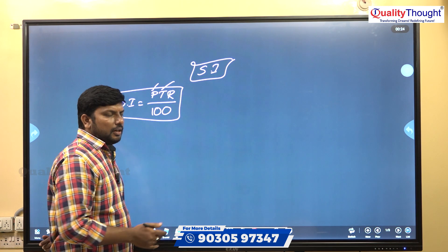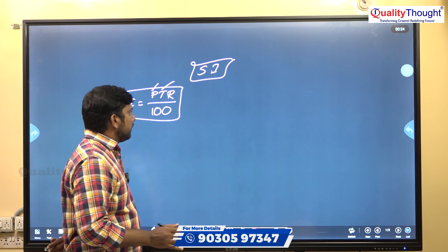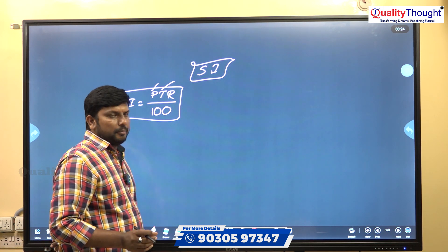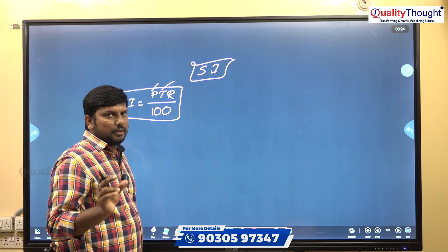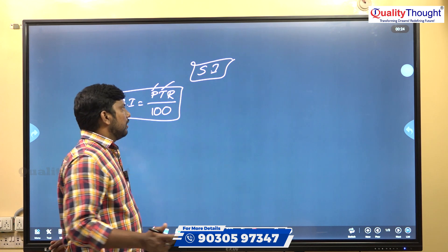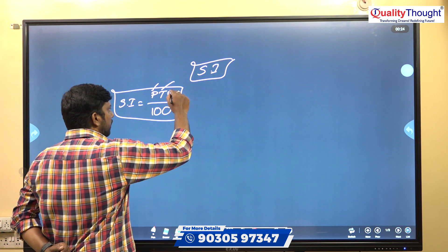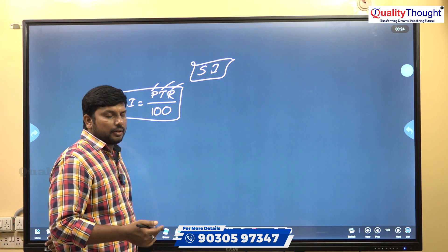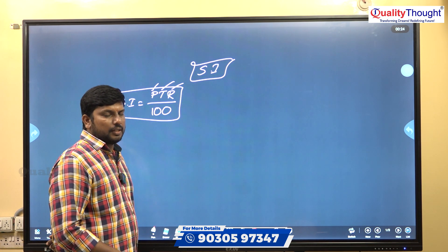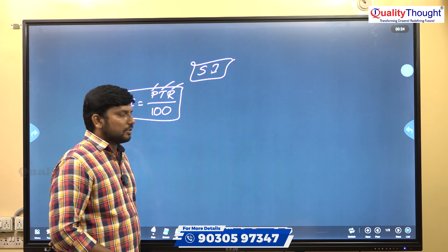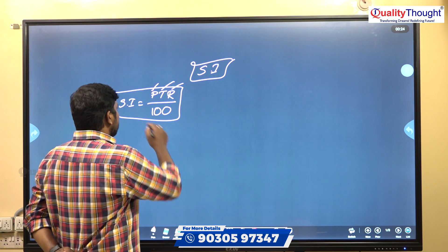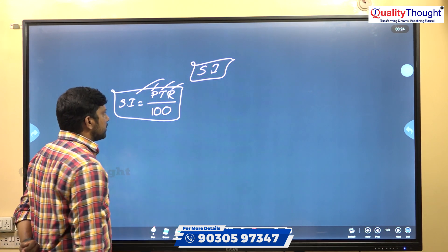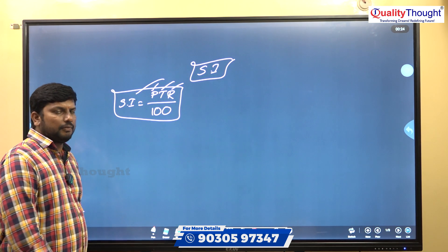T stands for time period, meaning the duration of the term. And R means rate of interest. This is the simple interest formula: SI = PTR / 100.